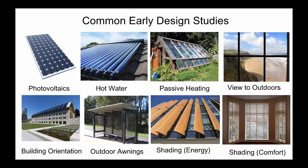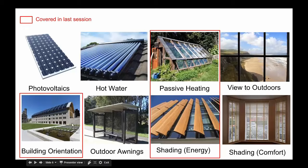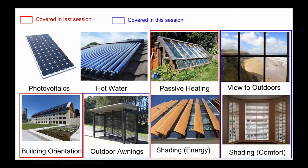Just to rehash what we've already covered: out of all these early design studies, we've covered how to inform building orientation with different radiation studies, how to use that to inform shading for energy use and HVAC sizing, which also goes hand in hand with passive heating. In this session, we're going to cover designing shades for the outdoors and outdoor awnings, shading for comfort, and then preserving views to the outdoors — people's connection to the outdoors.